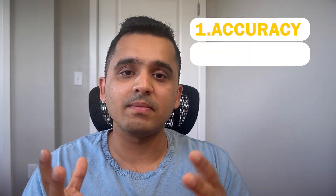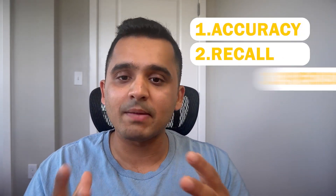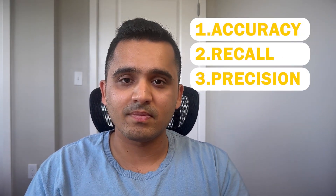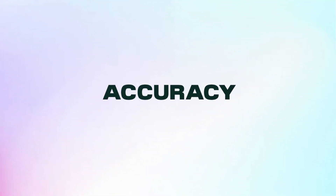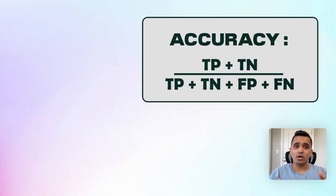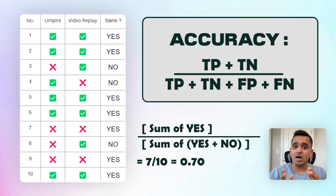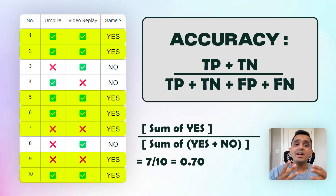These terms help calculate crucial metrics like accuracy, recall, and precision. Starting off with accuracy, it is the total number of correct calls — both out and not out — divided by all the decisions made.